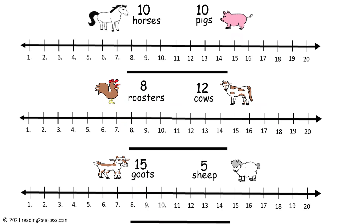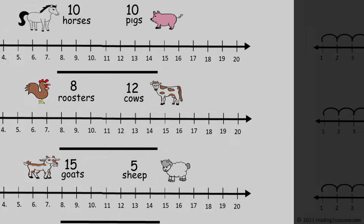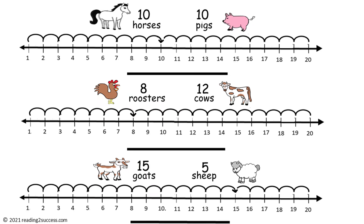Now have kids complete these three number lines. Each number line consists of two numbers that will equal twenty. These are the three completed number lines, and this is the completion of the practice page with the number lines and the completed equations: ten plus ten equals twenty, eight plus twelve equals twenty, and fifteen plus five equals twenty.